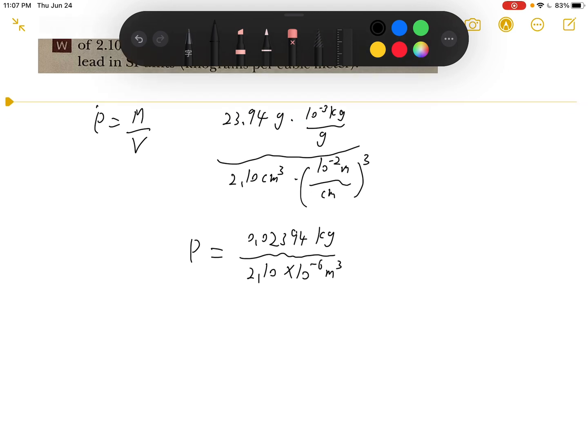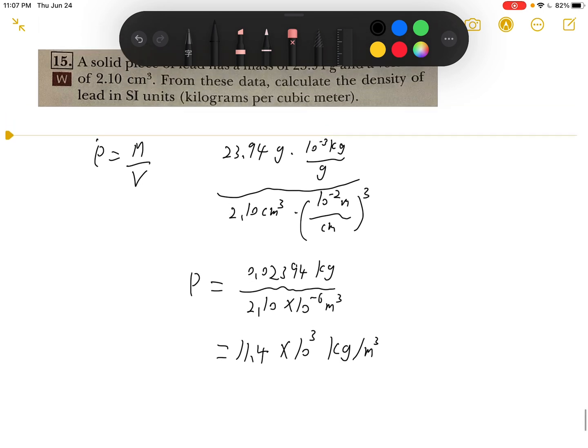Which gives us 11.4 times 10 to the third power kilograms per meter cubed. This is the density for the lead. Thanks a lot.